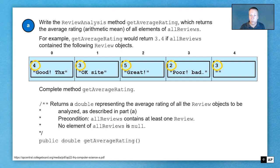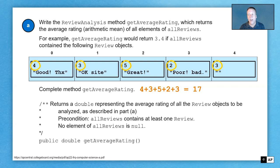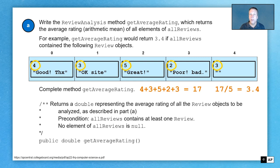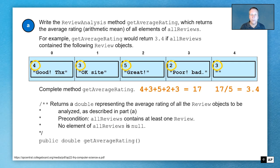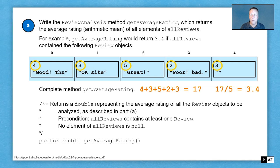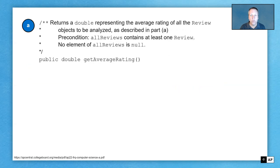How do we calculate the average? We're going to add them all together, and all those numbers together equals 17. There are five of those numbers, so we're going to divide: 17 divided by five is 3.4. You might look at that and say those are integers — and you're right, that's going to have to come into play. We know that we're going to want to return a double for getAverageRating, so we're going to have to account for that. getAverageRating will return 3.4 if allReviews contains these review objects.